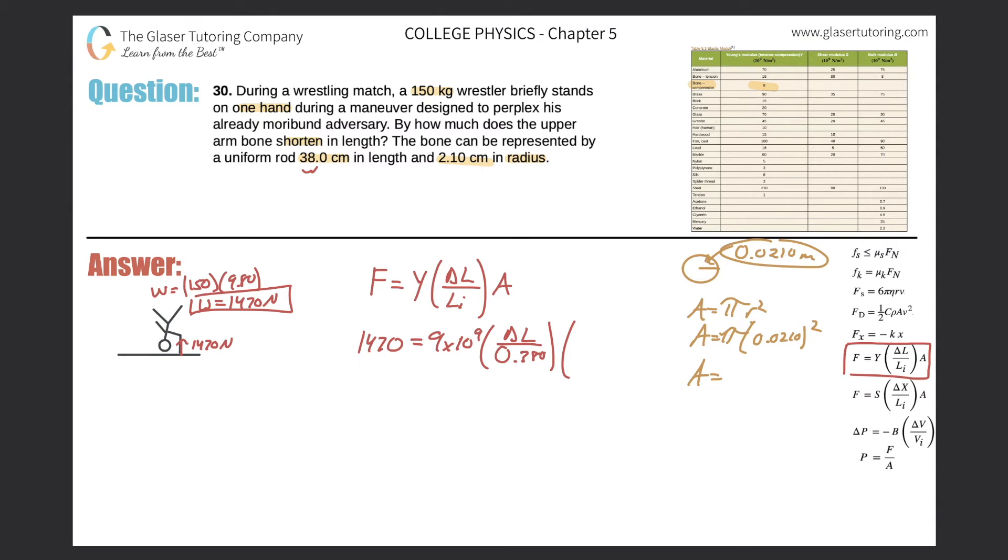So I get a value here of 1.39 times 10 raised to the negative 3. And that is in meters squared. So that's the area.